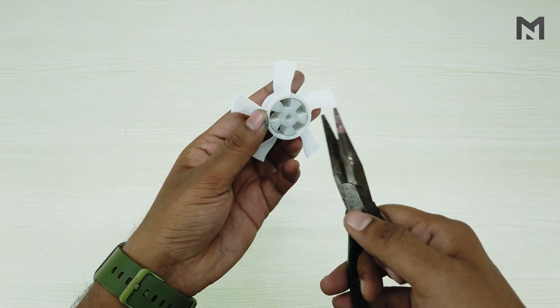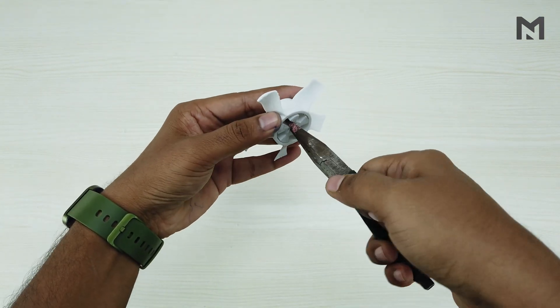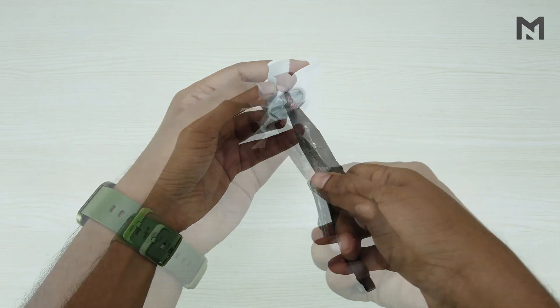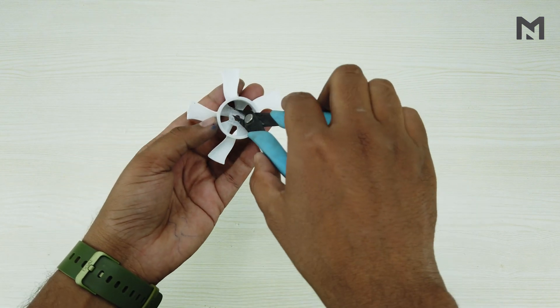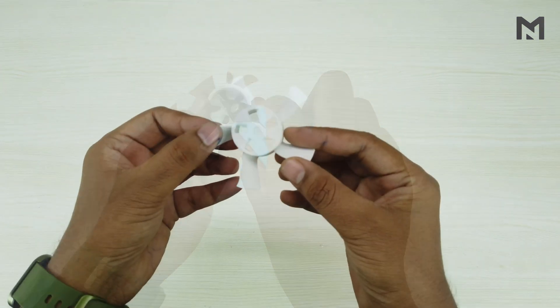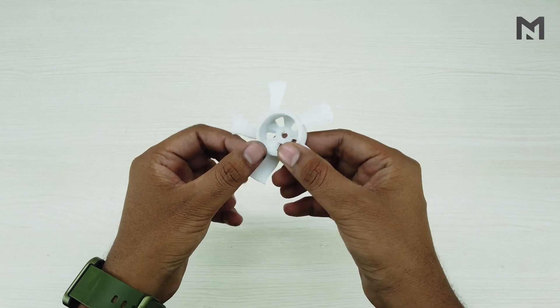Remove the center support with the nose plier. Grab the support and twist it in both directions. Once it gets loose, it can be easily pulled out. Then remove the leftover supports using a nose plier. After removing the support, you will get a clean part.